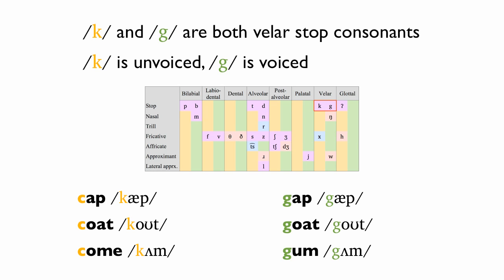C and G are both velar stop consonants. C is unvoiced. G is voiced. Cap — Gap. Coat — Goat.